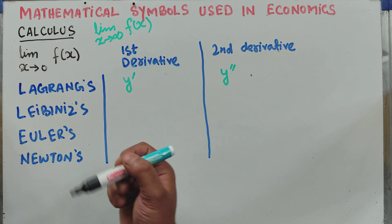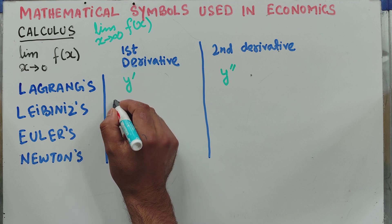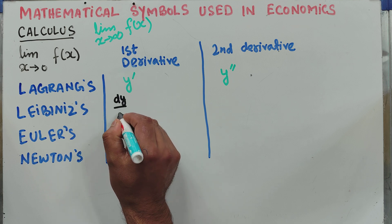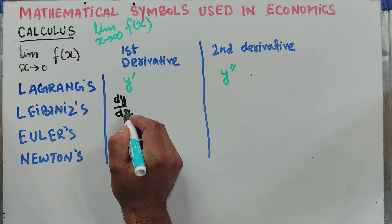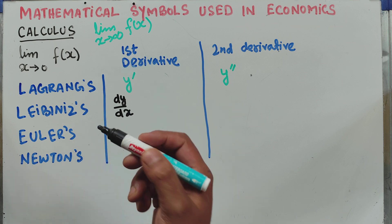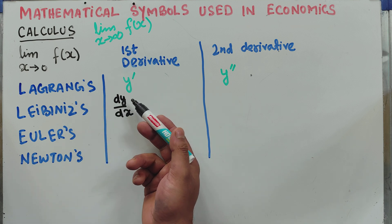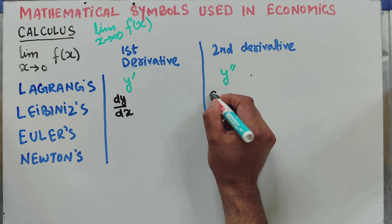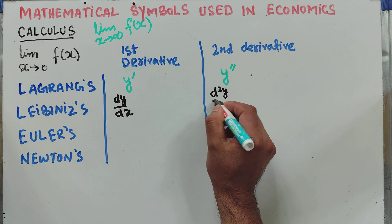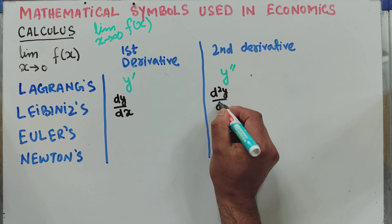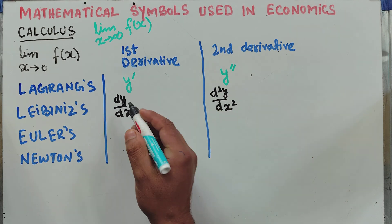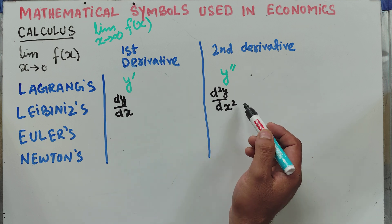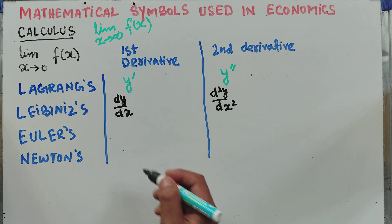Then we have Leibniz notation, which is quite familiar. It is written as dy upon dx, and this denotes the first derivative of a function f of x. Similarly, the second derivative is denoted by d squared y upon dx squared.